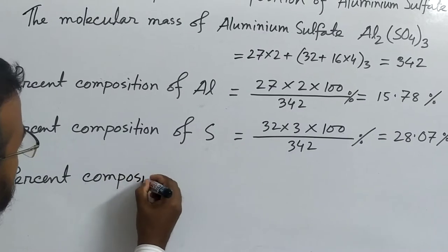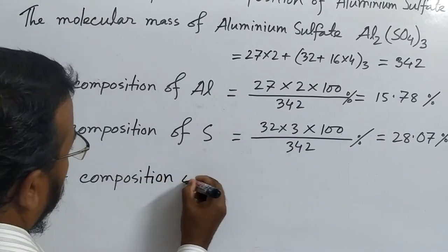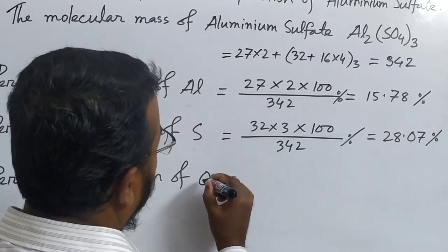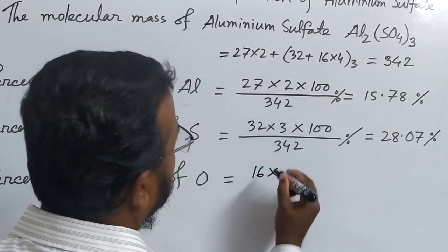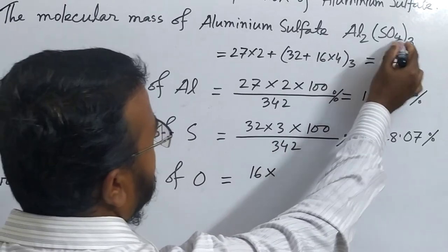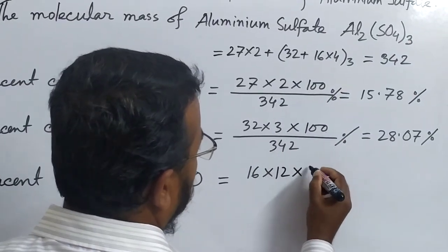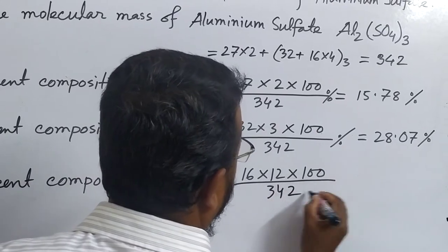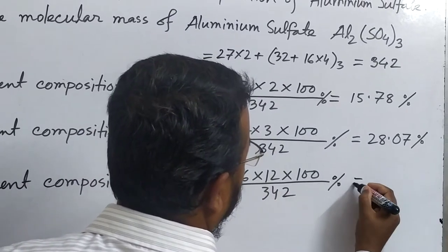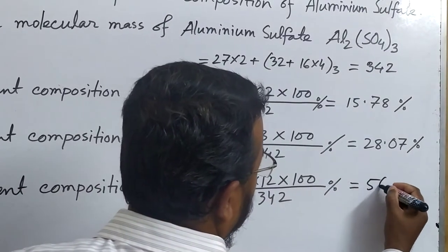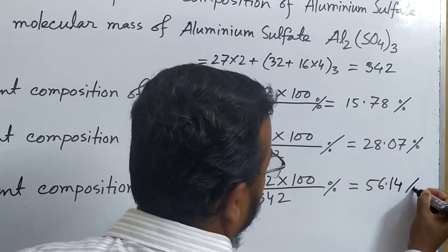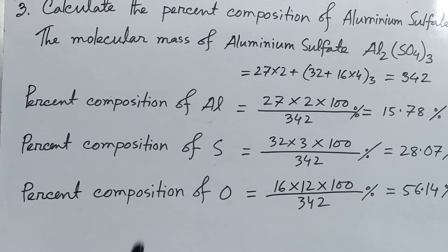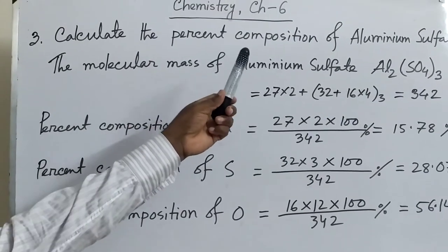Percent composition of oxygen: atomic mass of oxygen is 16. How many oxygen atoms are there? 12. So 16 × 12 × 100 ÷ 342. We get 56.14 percent.